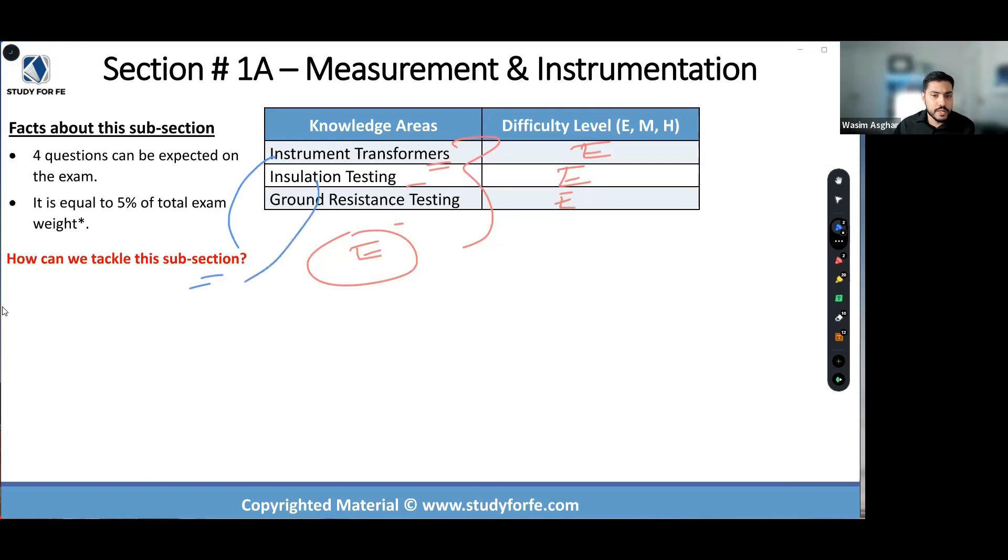Insulation testing - the handbook contains a lot of details. Wattmeters and the sample example includes two wattmeter methods. That's also an area not covered in the handbook. Ground resistance testing is also a concept. There are details in the handbook, so please make sure you are familiar with them. Overall easy, but read through the problems carefully because sometimes seemingly easy problems can be made difficult if you're not paying attention.